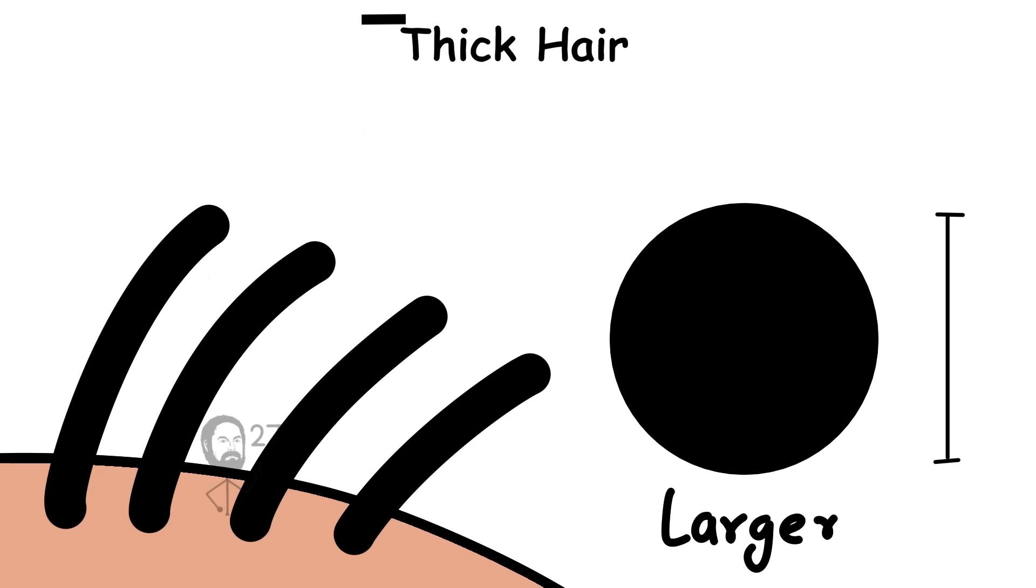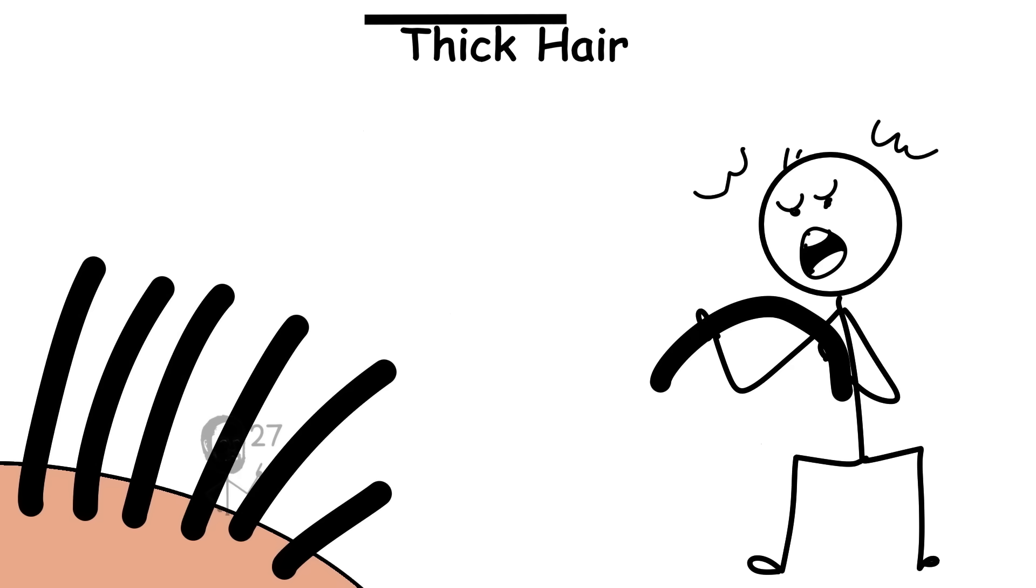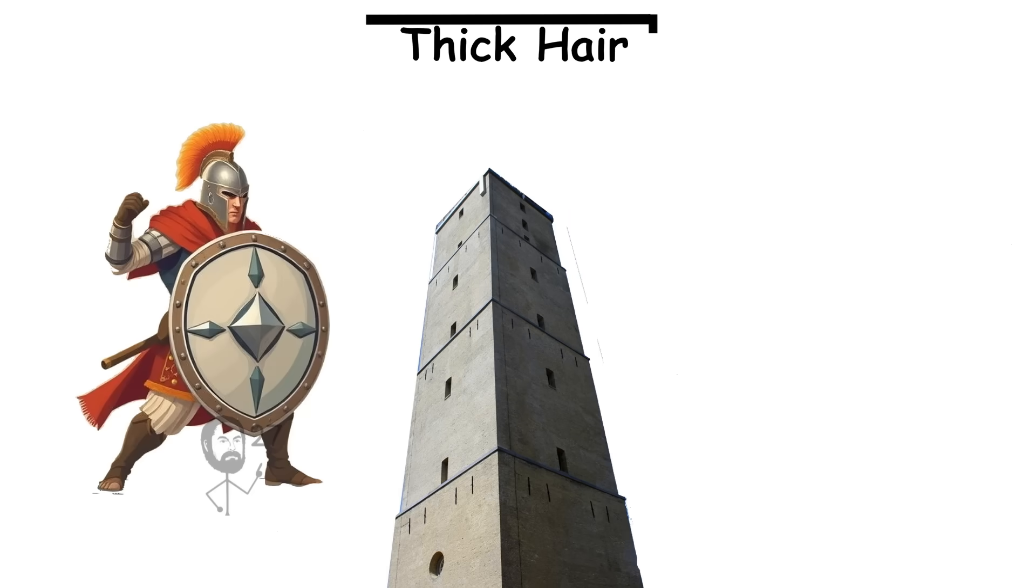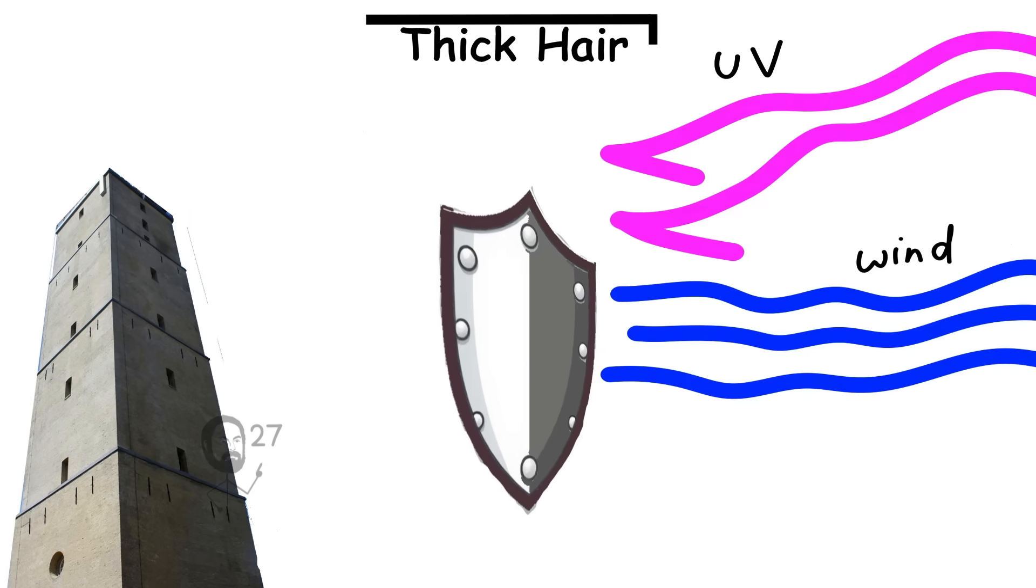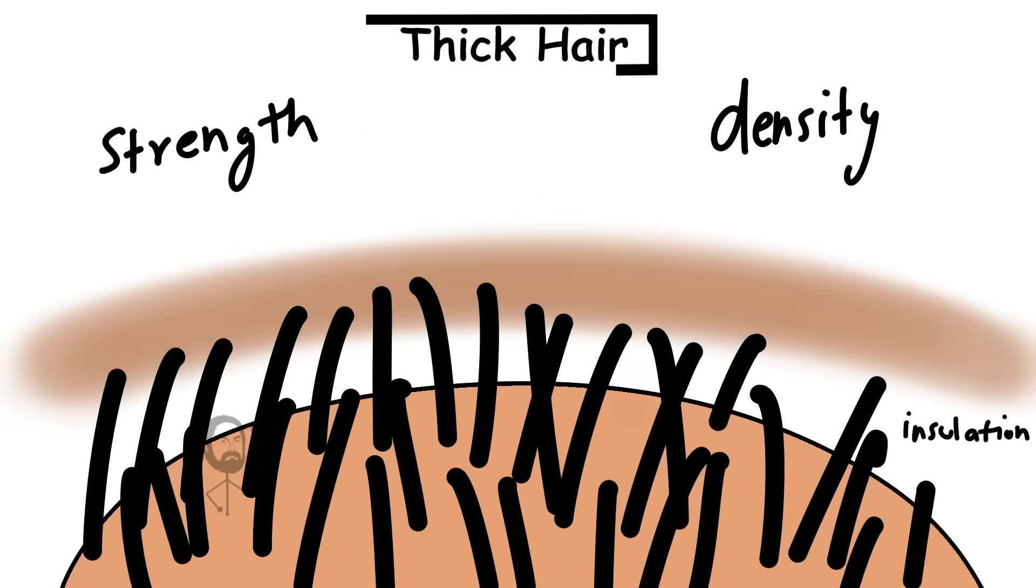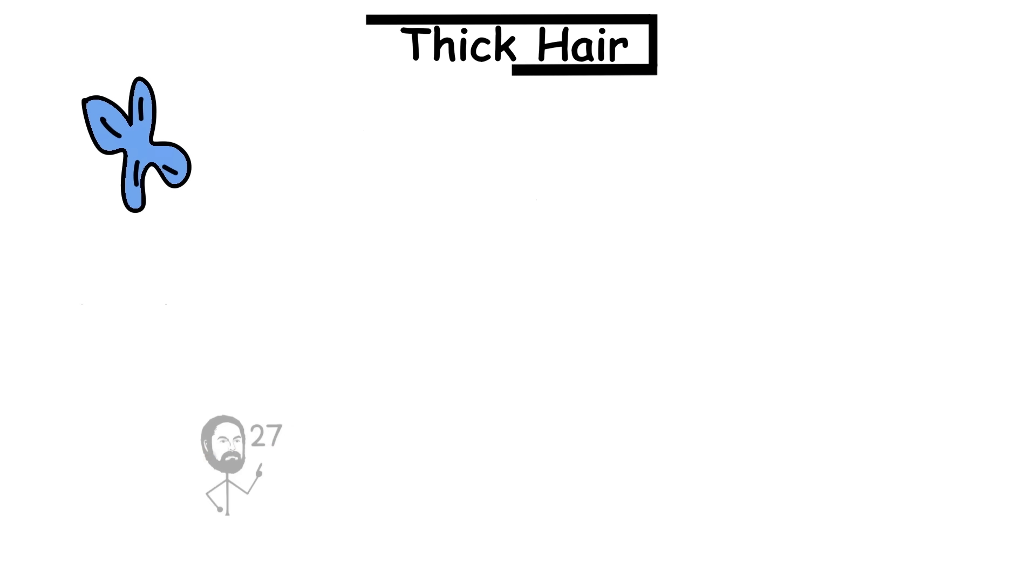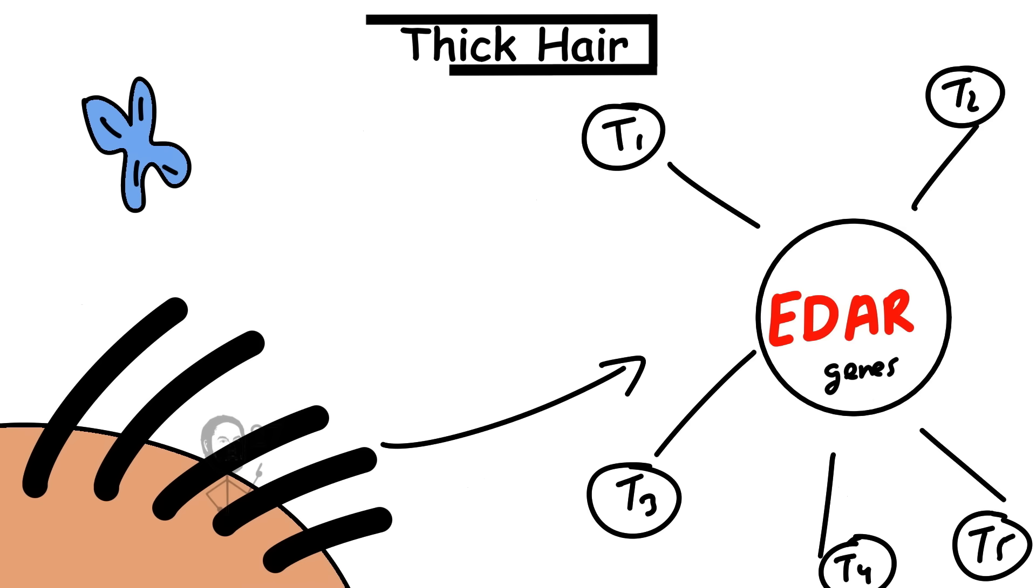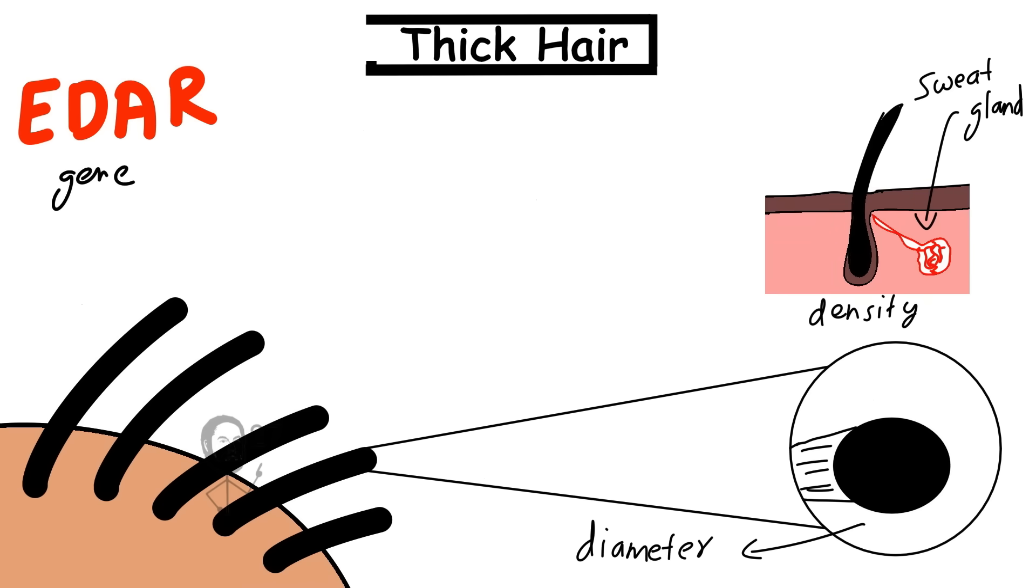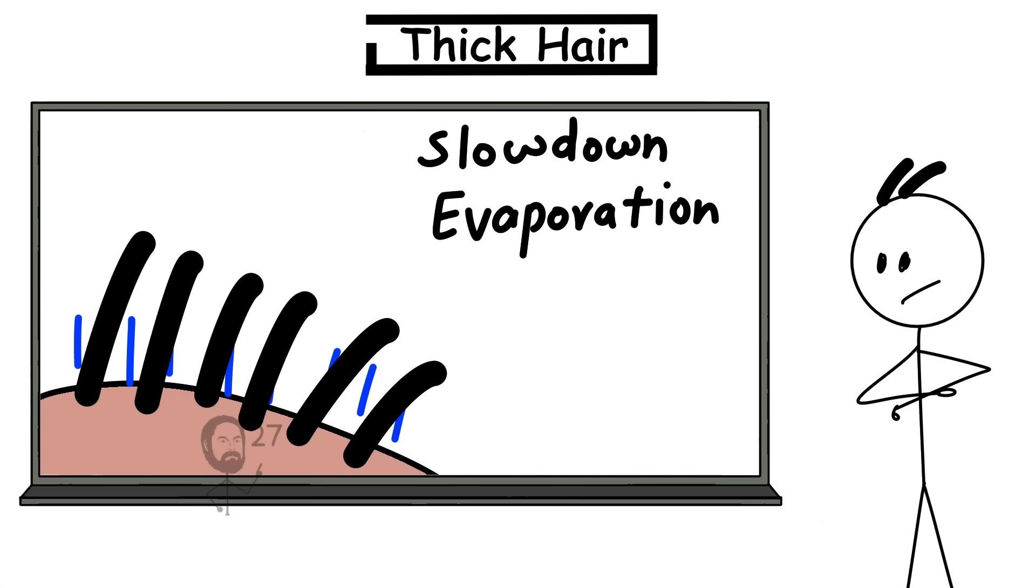Thick hair strands have a larger diameter and often contain more keratin layers, making them physically stronger and more resistant to breakage, friction, and environmental wear. This structure acts like natural armor, providing better protection against wind, UV radiation, and physical abrasion. The density and strength of thick hair also offer insulation for the scalp, which is particularly beneficial in cold or high friction environments. Genetically, thick hair is linked to variations in the EDAR gene, which not only affects hair diameter but also influences sweat gland density and skin traits. Thicker strands also retain moisture more effectively and slow down sweat evaporation, making them advantageous in cooler or drier settings.